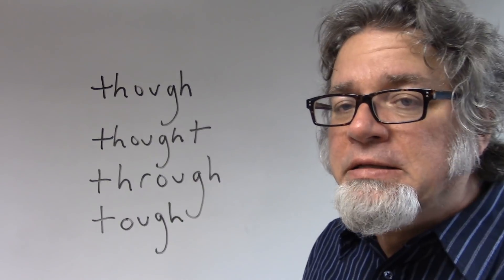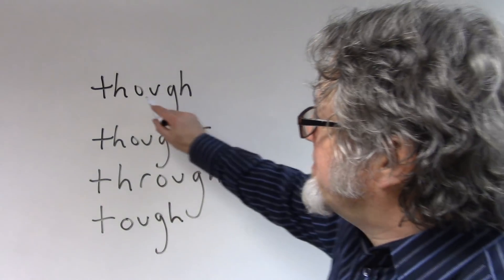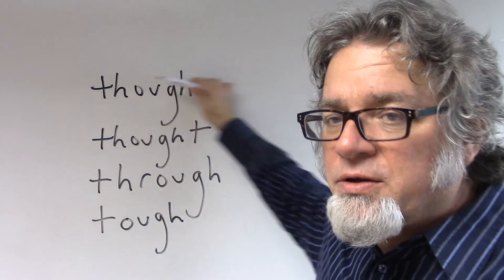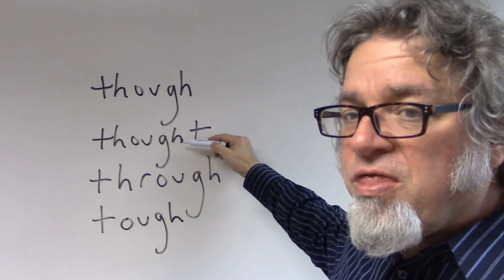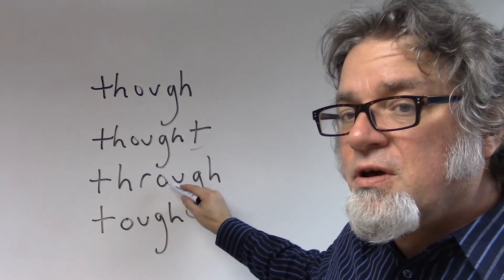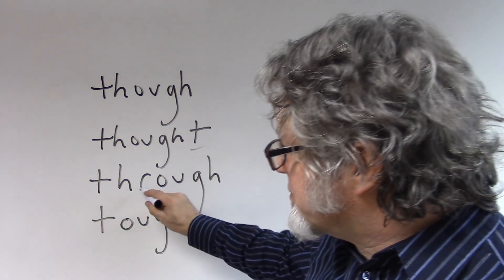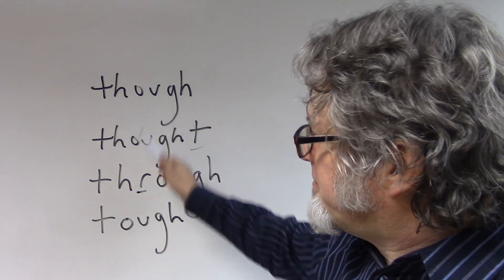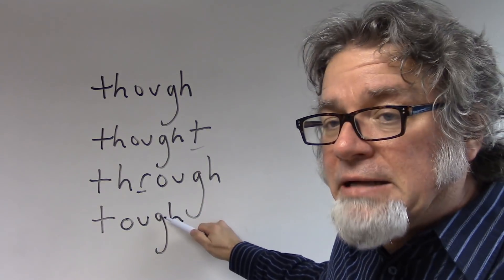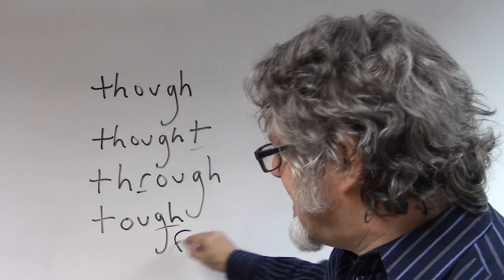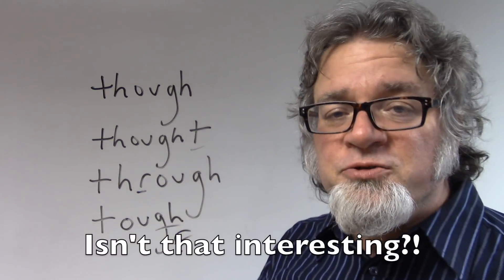Here are some words that look like though. Though. They're completely different, except they have this O-U-G-H. So this is pronounced though, this is thought, there's a T here. This is through, there's an R here. And if you take out the H from though, then you get tough. And this G-H is pronounced as an F. Isn't that interesting?